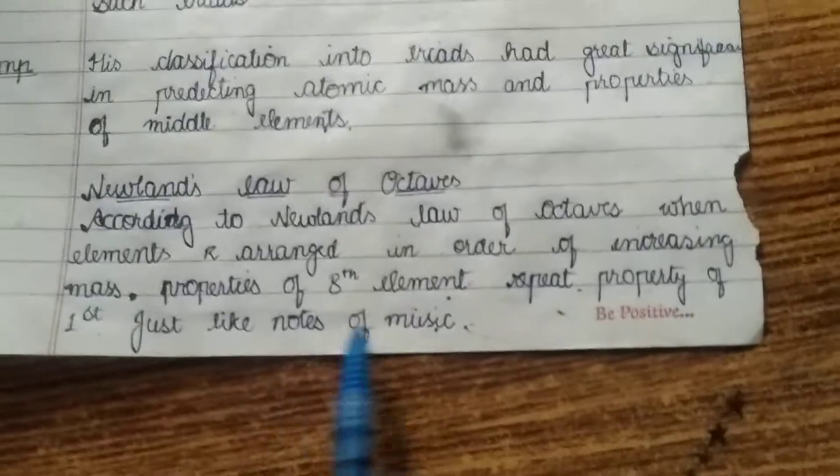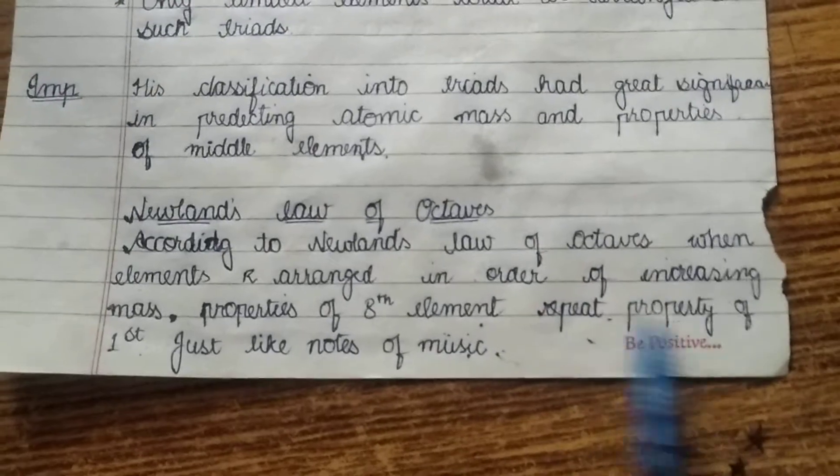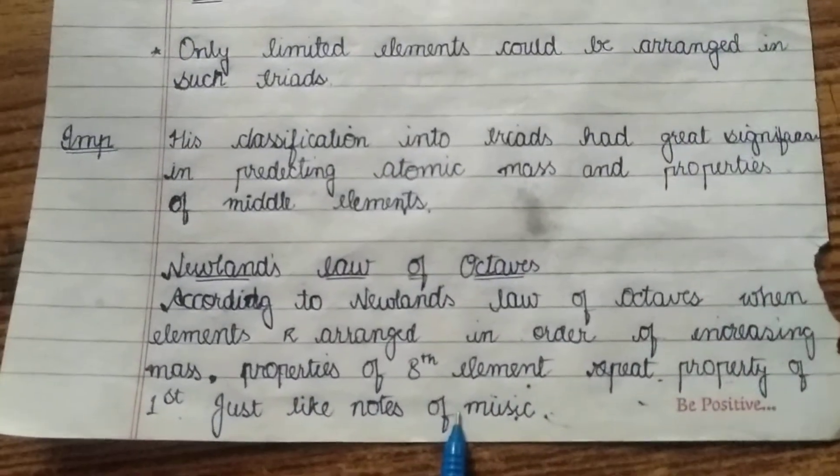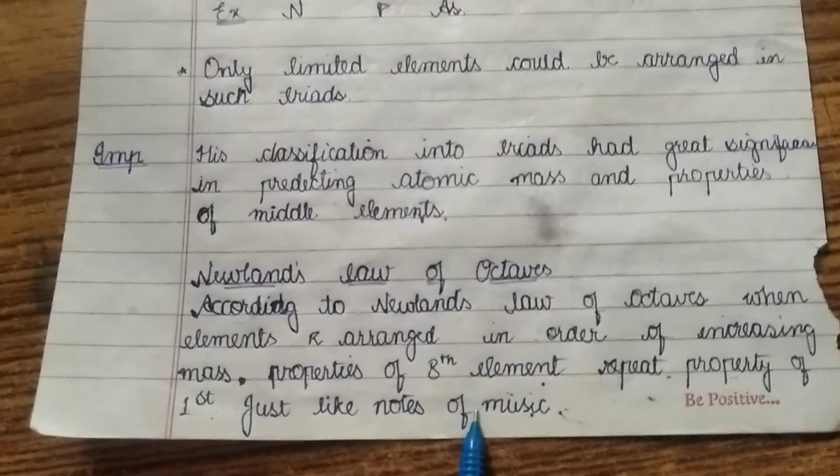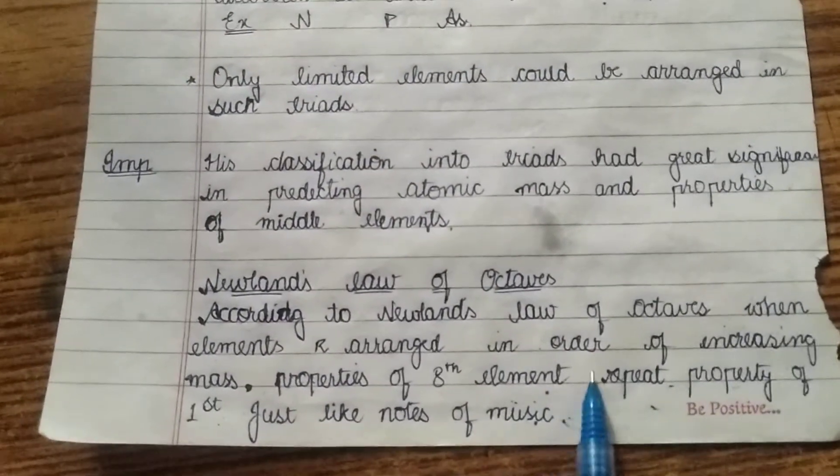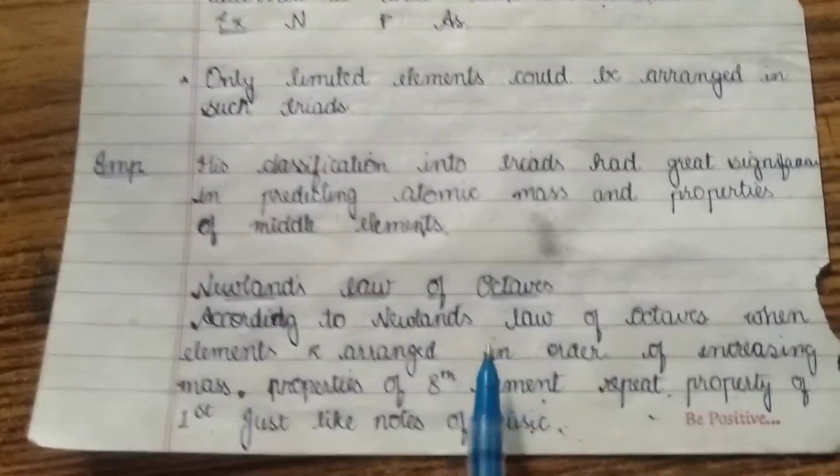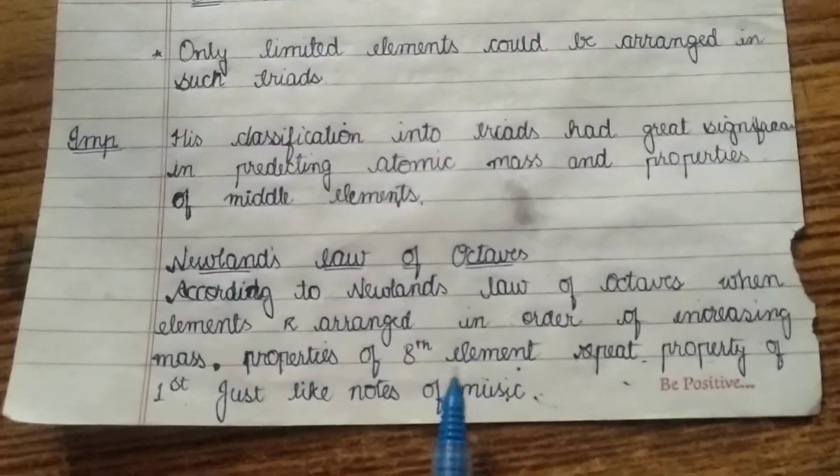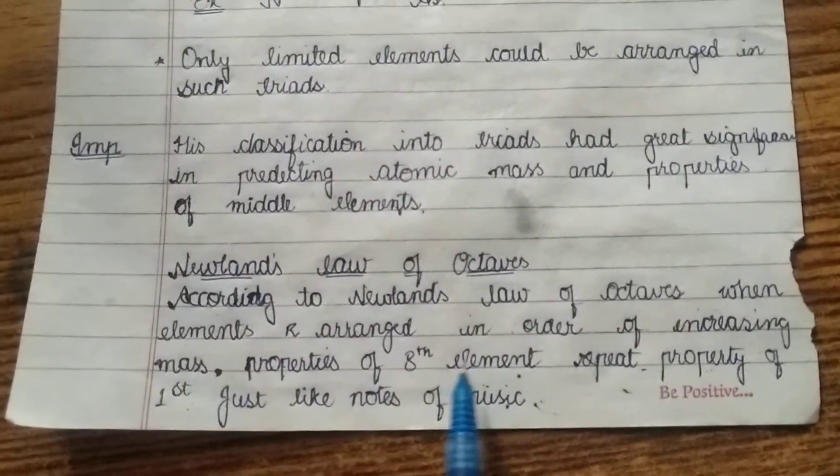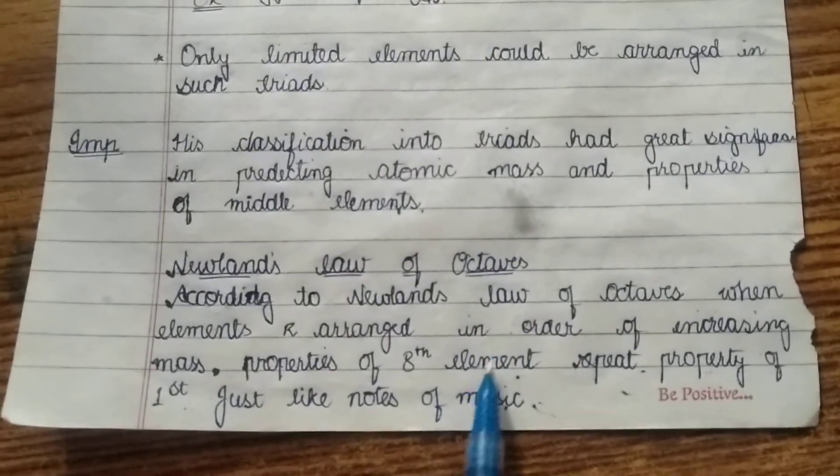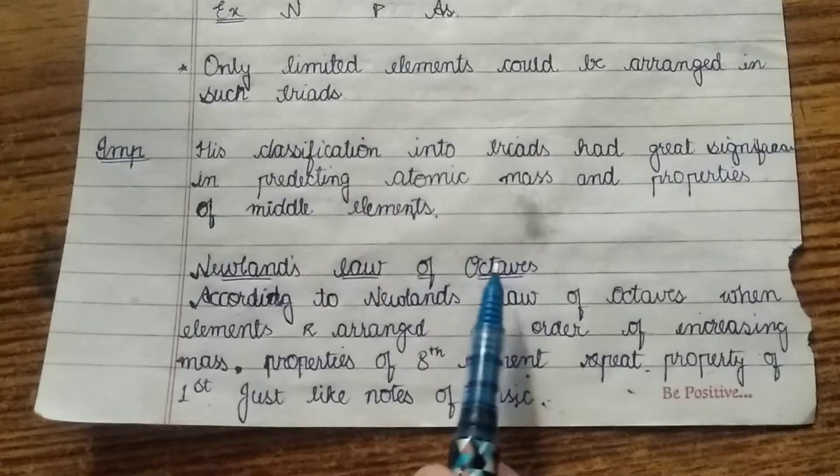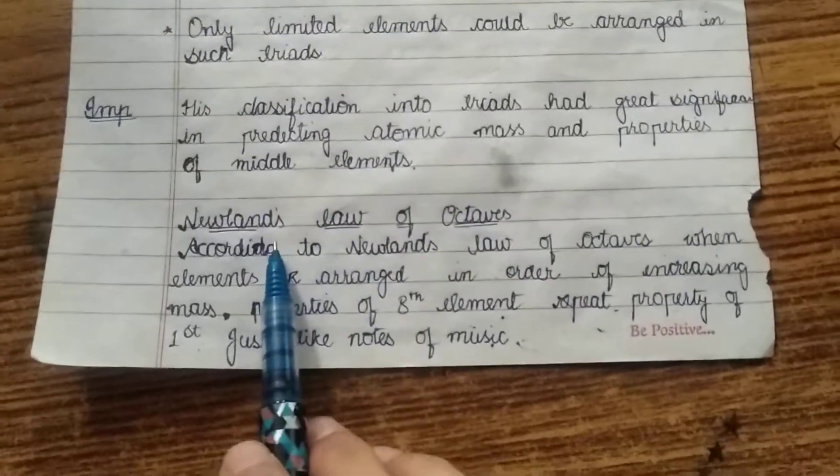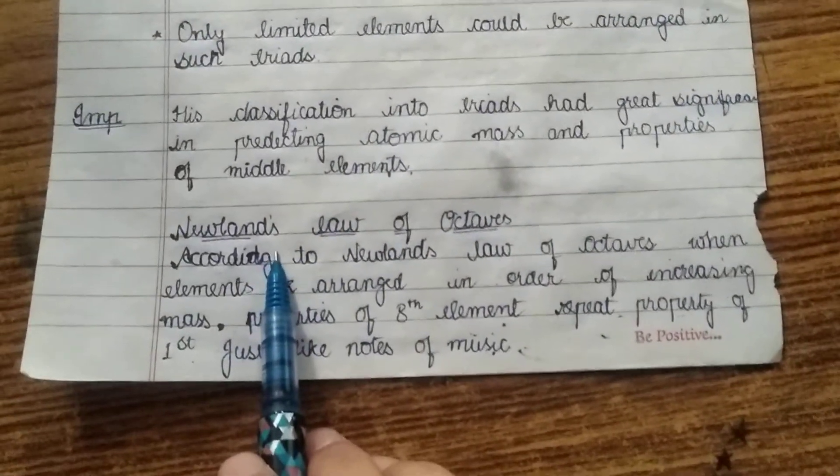The property of 8th element will repeat the property of the first, just like the notes of music. In the notes of music also we can see that sa, re, ga, ma, pa, dha, ni and again sa. In the same way, he made a law that in that law all the elements will repeat the property of the first. Therefore, this is known as law of octaves and since Newland has invented it, it came to be known as Newland's law of octaves.